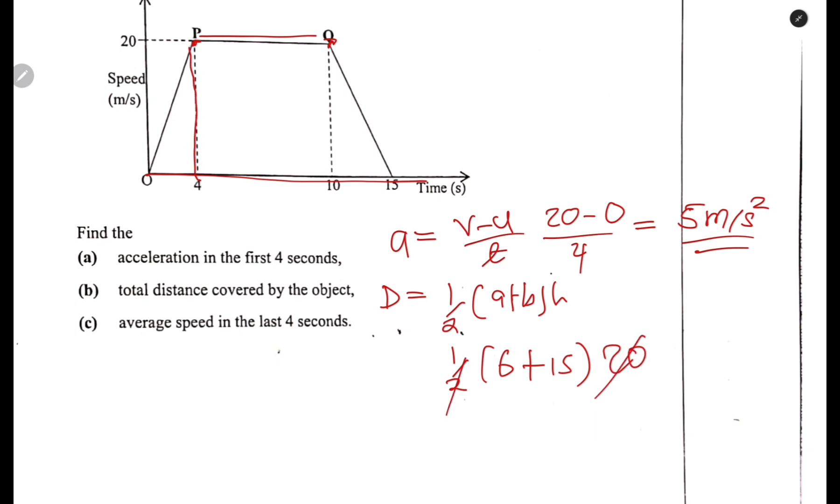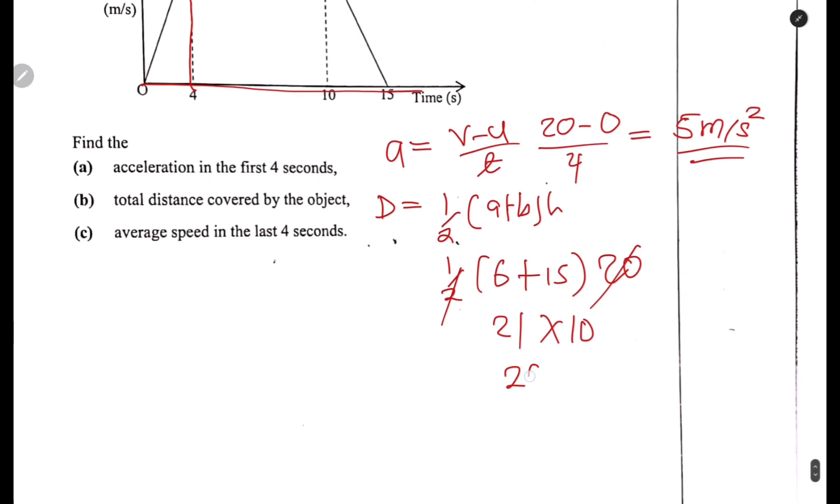So 2 and 20 cancel. In the brackets we have 6 plus 15, which gives us 21, then multiply by 10. This should give us 210 meters. So that is the total distance.